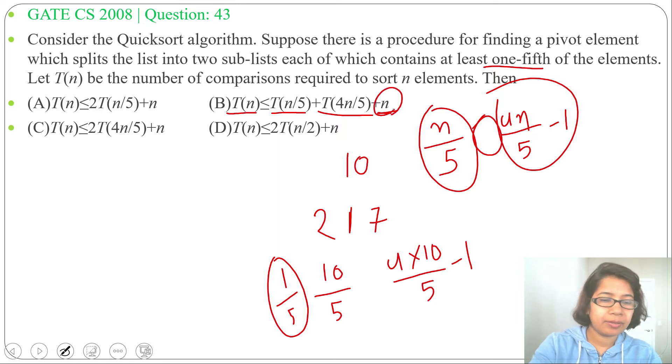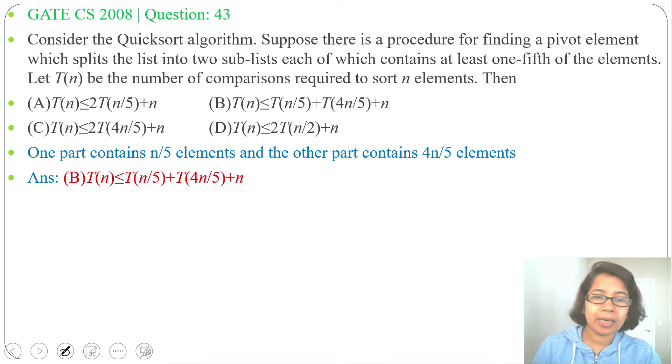One part contains n by 5 elements and other part contains 4n divided by 5 elements. So, recurrence relation will be T(n) less than equals to T(n/5) plus T(4n/5) plus n. Now, what will be running time for this recurrence relation, it will be theta of n log n.